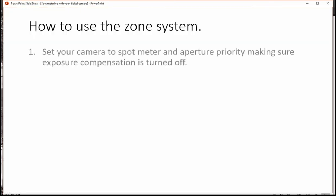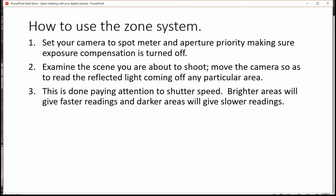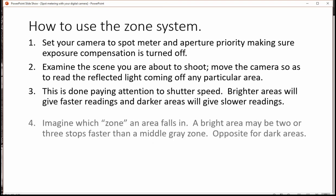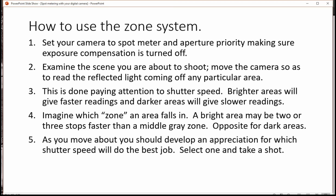So how do you use the zone system? Set your camera to spot and aperture priority and make sure exposure compensation is turned off. Examine the scene you are about to shoot and move the camera so as to read the reflective light coming off any particular area. This is done paying attention to shutter speed. Bright areas will give faster readings and darker areas will give slower readings. Imagine which zone each area falls in. A bright area may be two or three stops faster than a middle gray zone, opposite for dark values. As you move about you should develop an appreciation for which shutter speed will do the best job. Select one and take a shot.